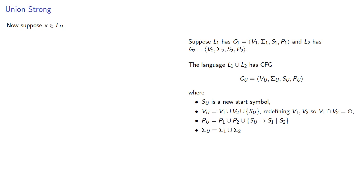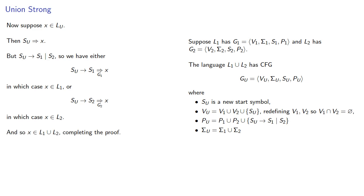Now suppose X is in our combined language. Then there must be a production rule SU start symbol of our combined language to X. But the only thing we can do with that start symbol is to drop it into S1 or S2. And so we either have SU drops into S1 and then produces X using the grammar rules for our first language, in which case X is in the first language, or SU drops into S2 and produces X using the grammar rules from the second language, in which case X is in our second language. And so X is in either L1 or L2, completing the proof.